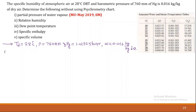First we have to find the partial pressure of water vapor, denoted as Pv. Since specific humidity is given, we can use the specific humidity formula in terms of Pv: W = 0.622 × Pv / (P − Pv). This is the formula for specific humidity.